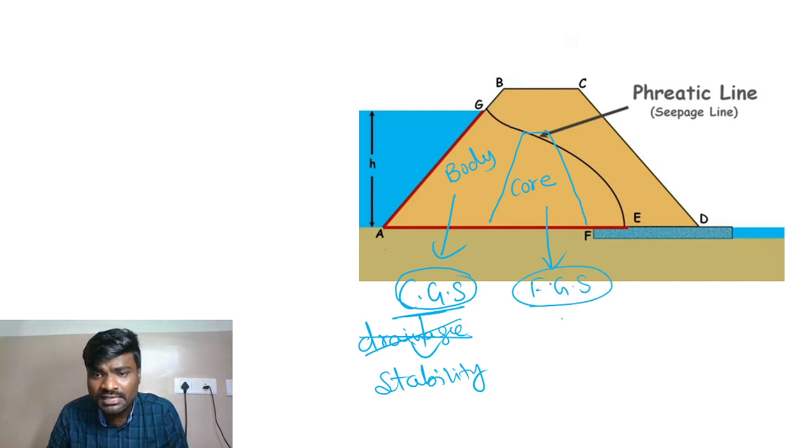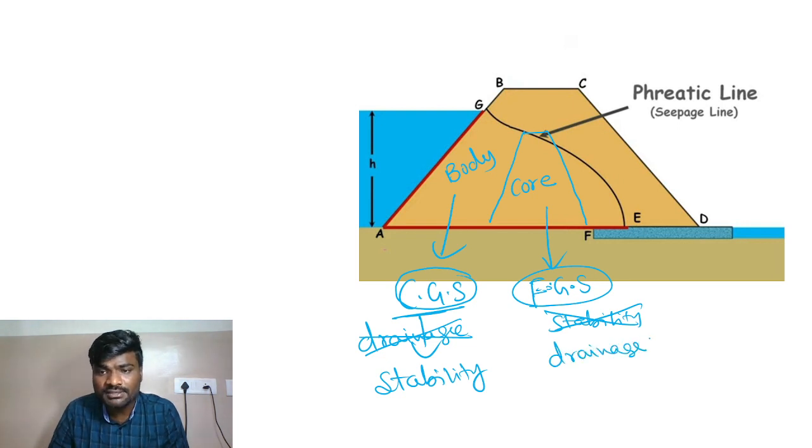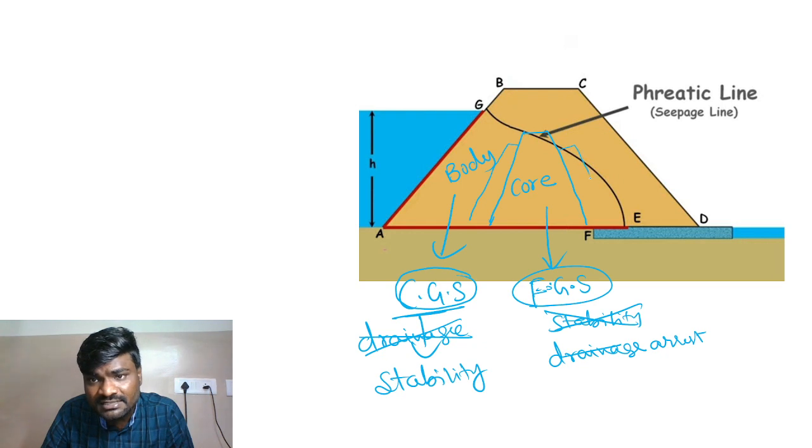The body uses coarse grain soil for construction, and the core uses fine grain soil. From a stability point of view, fine grain soils provide good stability. However, fine grain soils don't allow good drainage - they are less pervious. So the core employs fine grain soil for stability, while drainage is arrested. The body provides stability, and the core provides drainage resistance. This is a good design approach.